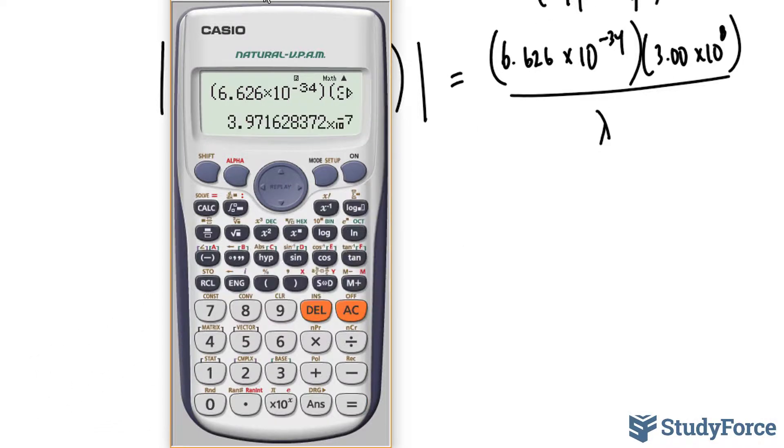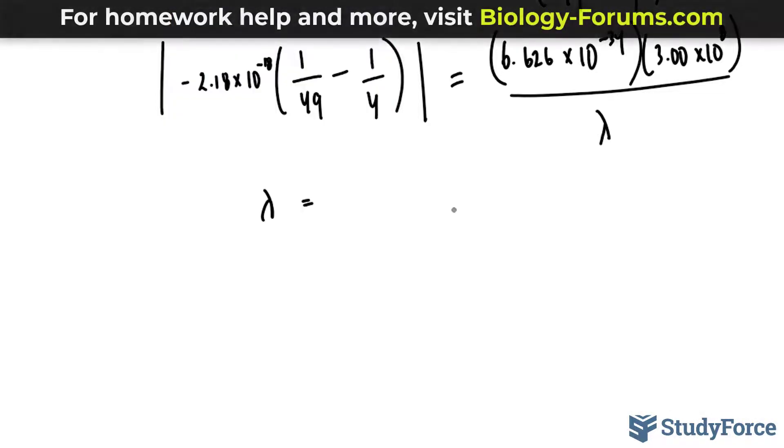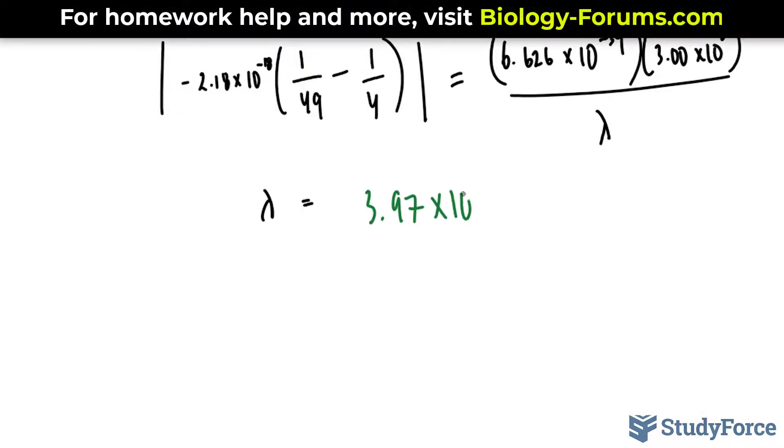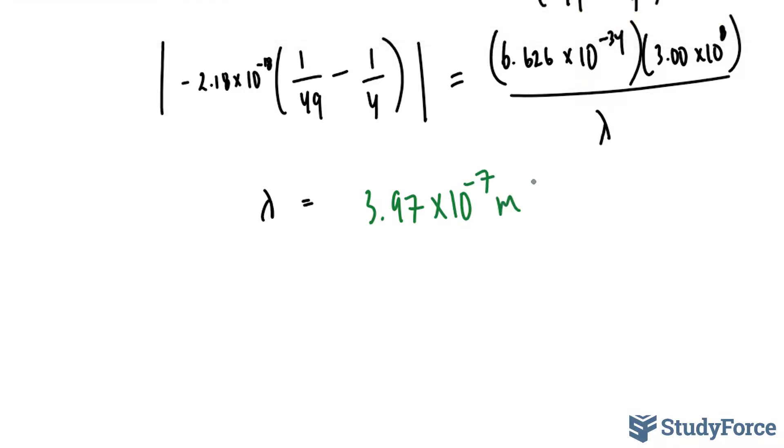This gives us 3.9716 times 10 to the power of negative 7, and to 3 significant figures, that's 3.97 times 10 to the power of negative 7 meters. 3.97 times 10 to the power of negative 7 meters.